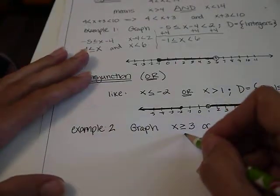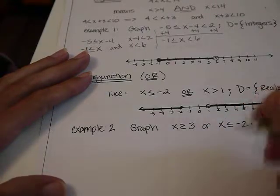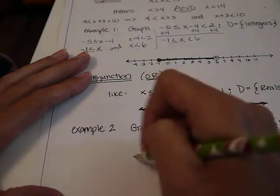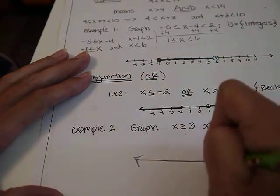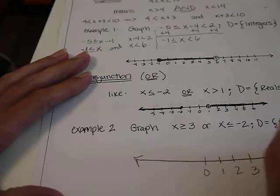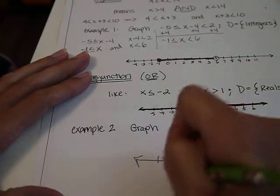So here we are here, graph x is greater than or equal to 3, or x is less than negative 2. Again, we've got integers.